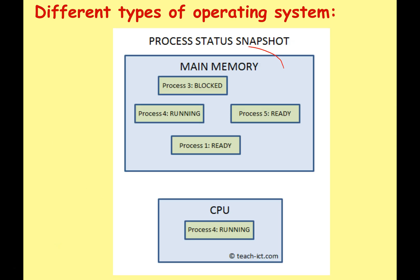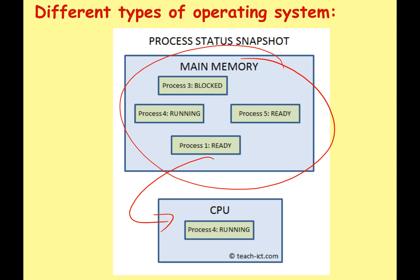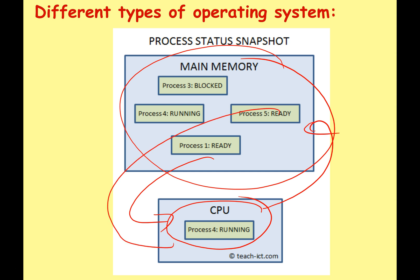In your main memory you've got lots of different processes running, but there's only one that can get CPU time at once — for example, process 4. After process 4 has been given a small time to operate, it will go back into memory and maybe process 5 will move into the CPU. Then it'll move back into memory, and process 1 will go into the CPU. The nature of which process goes next is controlled by the operating system scheduler, which we'll look at in a future lesson.